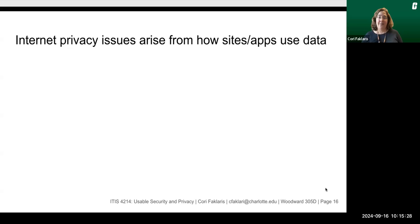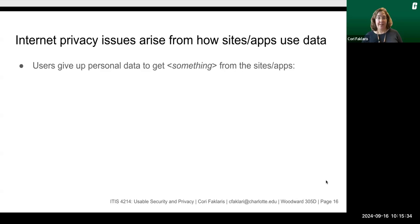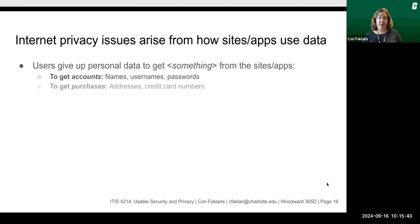Internet privacy issues arise from how sites or apps use data. Users give up their personal data to get something from the sites or apps, such as their accounts — we get our names, usernames, and passwords in return. We might also get purchases, so we'll give up addresses and credit card numbers. We might get directions or nearby information through our location, and there are lots of other examples.